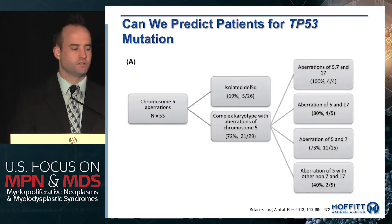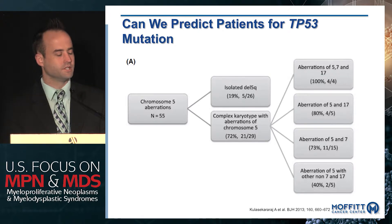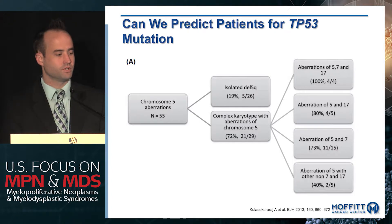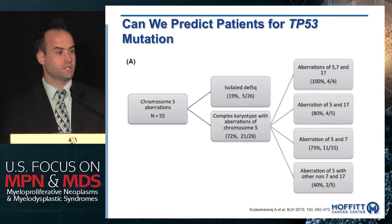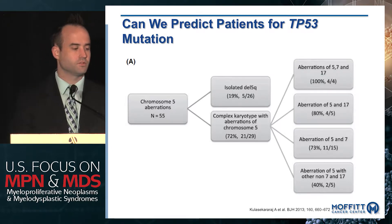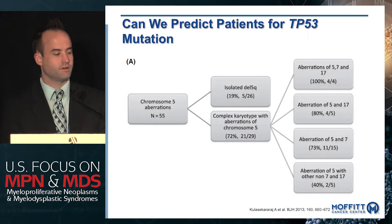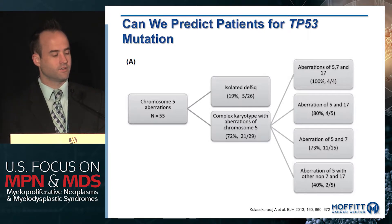Even without next-generation sequencing, you can predict p53 mutation from cytogenetics. p53 is enriched even in patients with isolated deletion of 5q — approximately 20% of patients upon lenalidomide failure have a p53 mutation — but if you have a complex karyotype with an abnormality of chromosome 5, you have anywhere from 70 to 100% risk of having a p53 mutation.